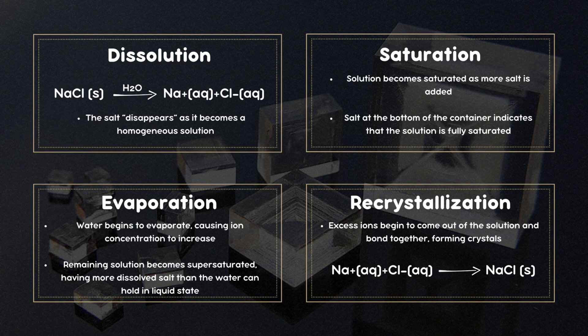The crystallization of sodium chloride can be explained in these four steps. Starting with dissolution, when salt is added to water, it dissolves into its constituent ions. Water molecules are polar, meaning they have a partial positive charge on the hydrogen side and a partial negative charge on the oxygen side. These polar water molecules surround the sodium and chloride ions, breaking the ionic bonds and pulling the ions into the solution. This results in the salt disappearing as it becomes a homogeneous solution.